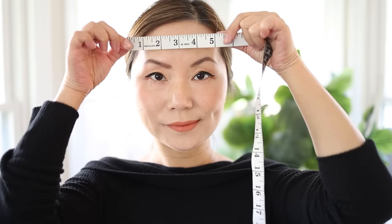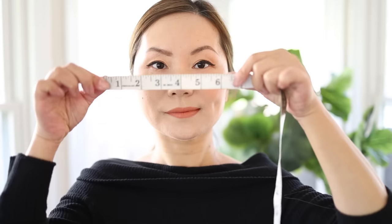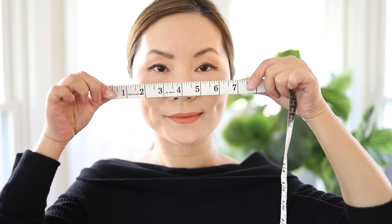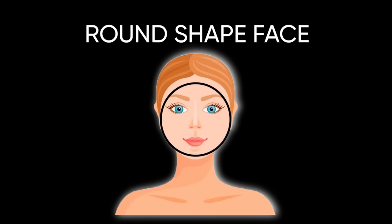The first line is the width of your forehead. The second line is the width of your cheekbones. The third is the width of your jaw lines. And the fourth — the vertical one — is the length of your face from the very top to the very bottom of your chin. The round face shape — this is my face shape.